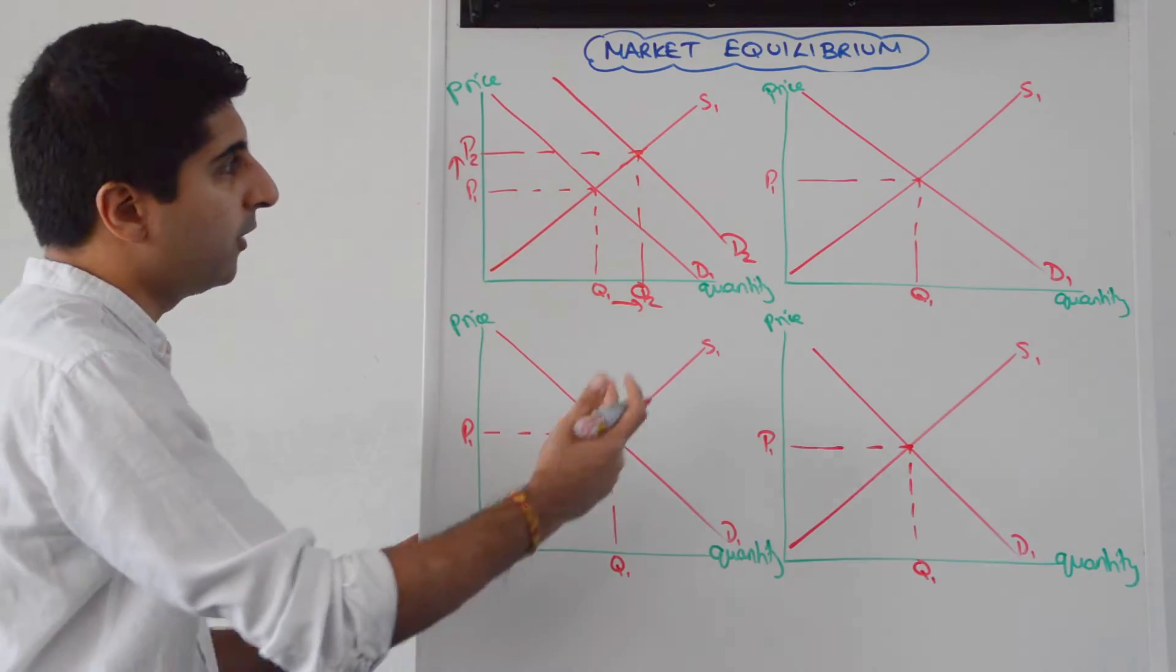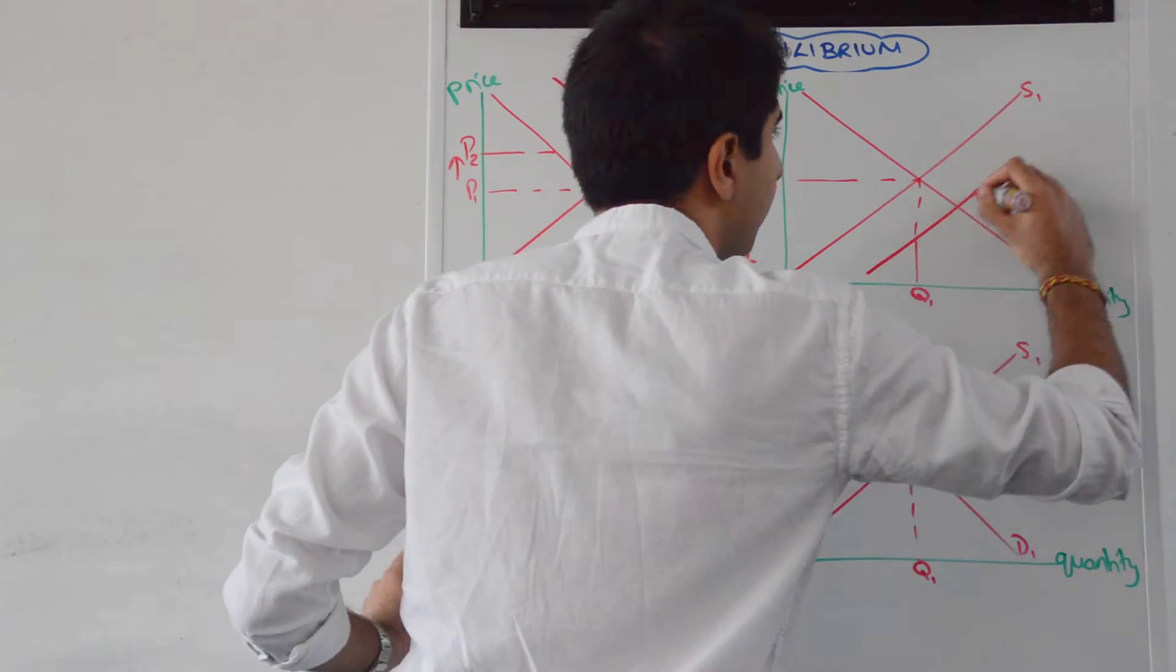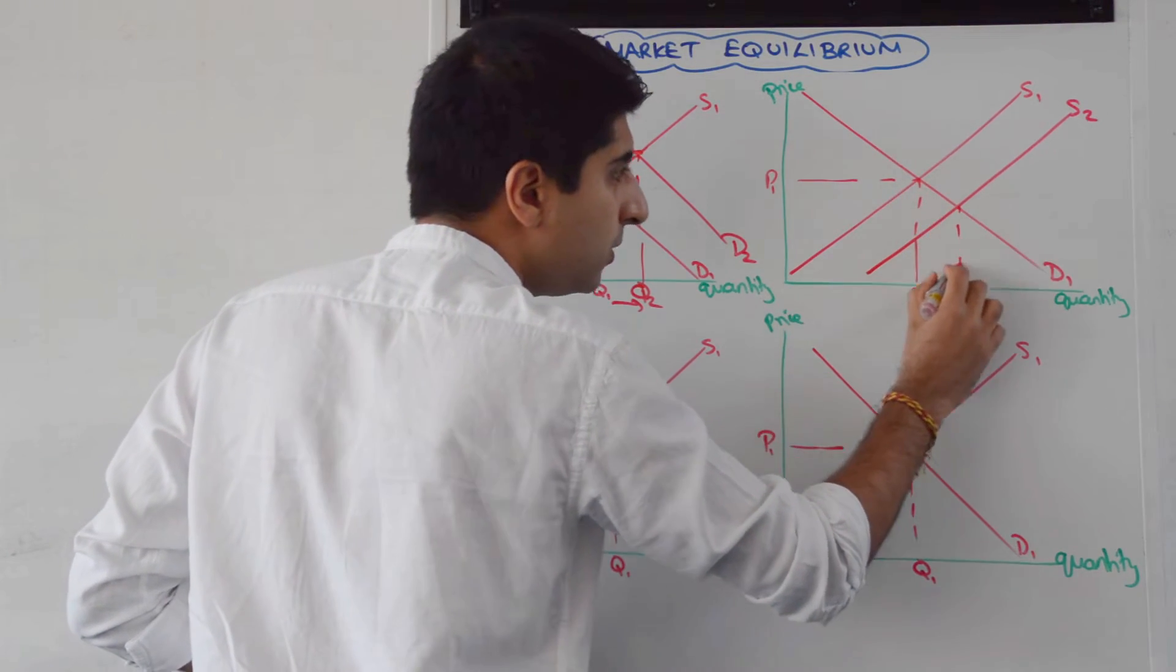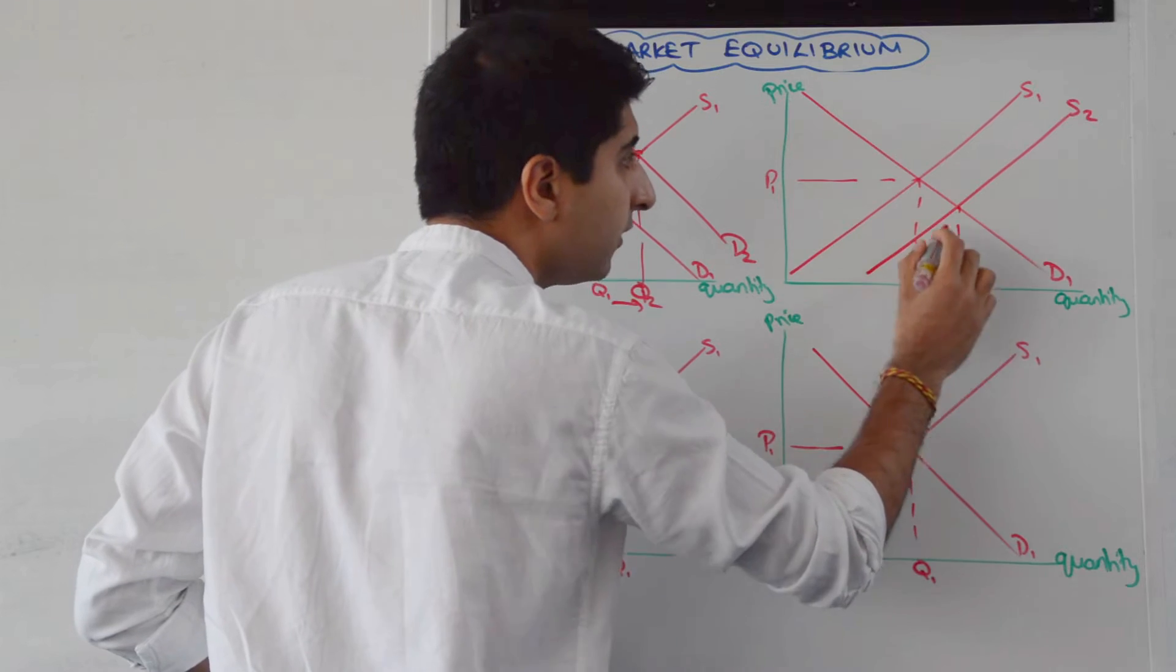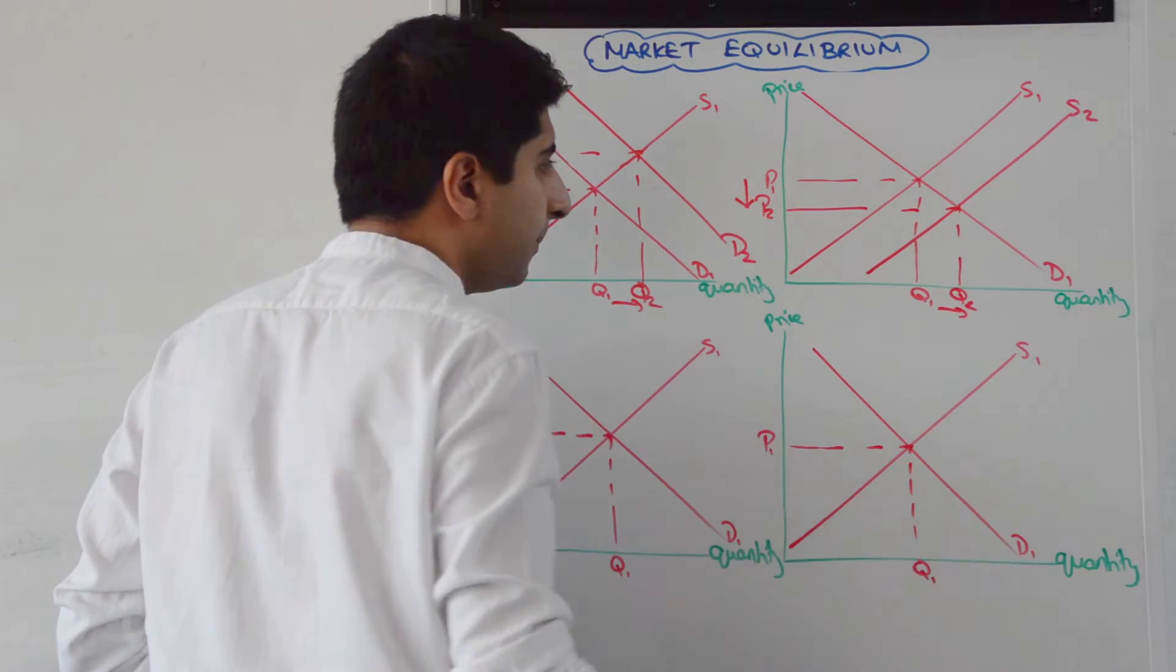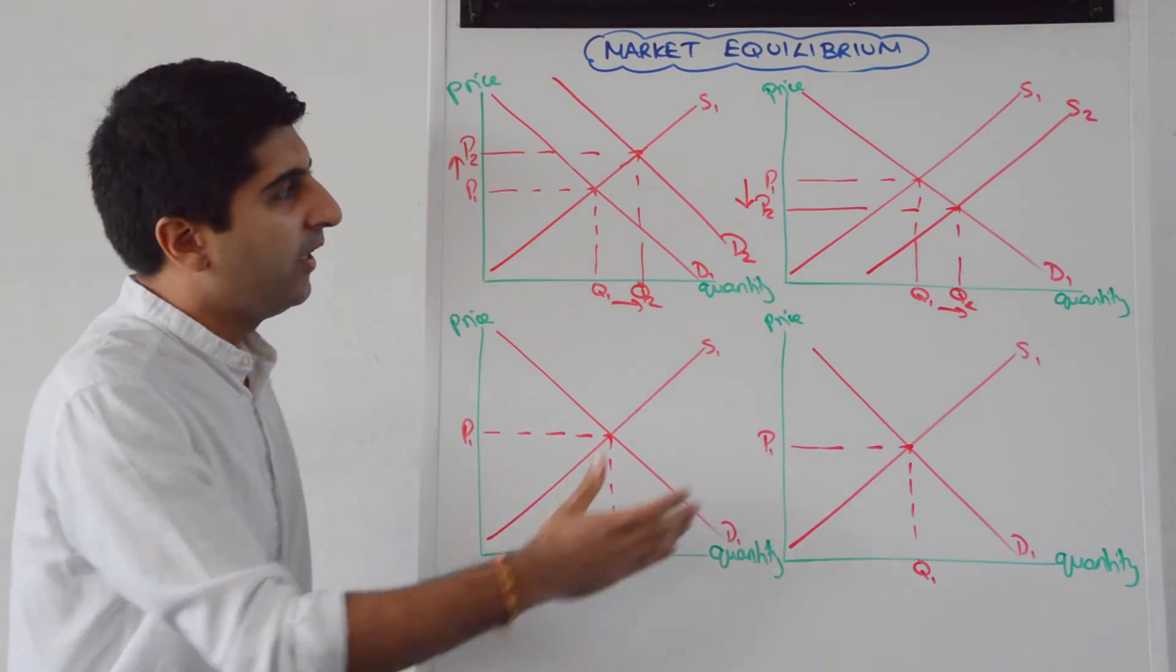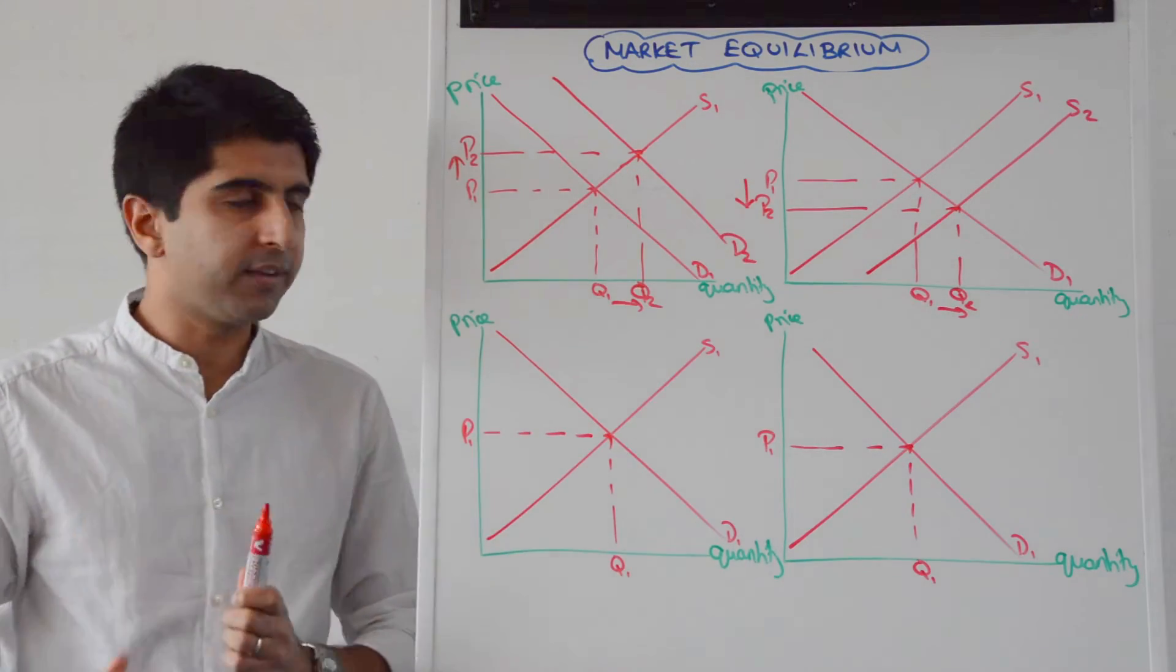What about a supply shift to the right? Well, a supply shift to the right is as simple as that from S1 to S2. If we show the new equilibrium, again, there's an increase in quantity but now a reduction in price from P1 to P2. A good idea is always to draw arrows just to let the reader know exactly what's happening to price and quantity.